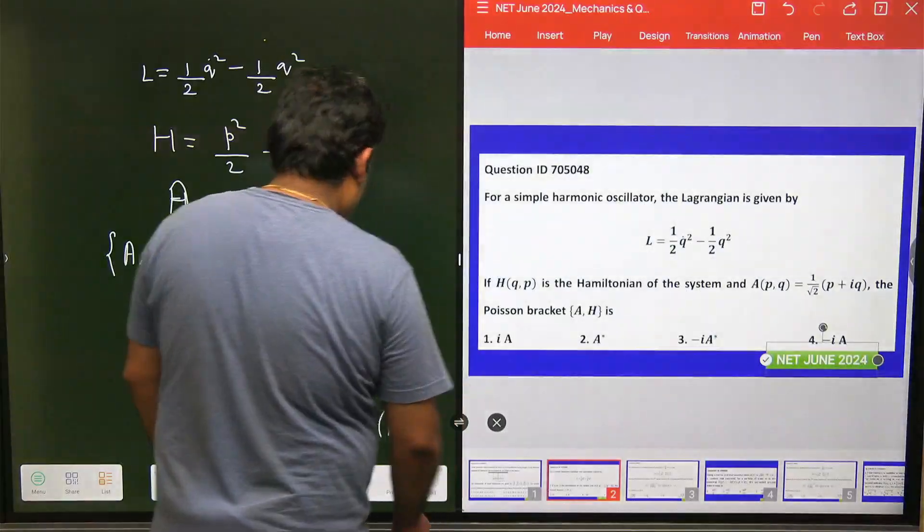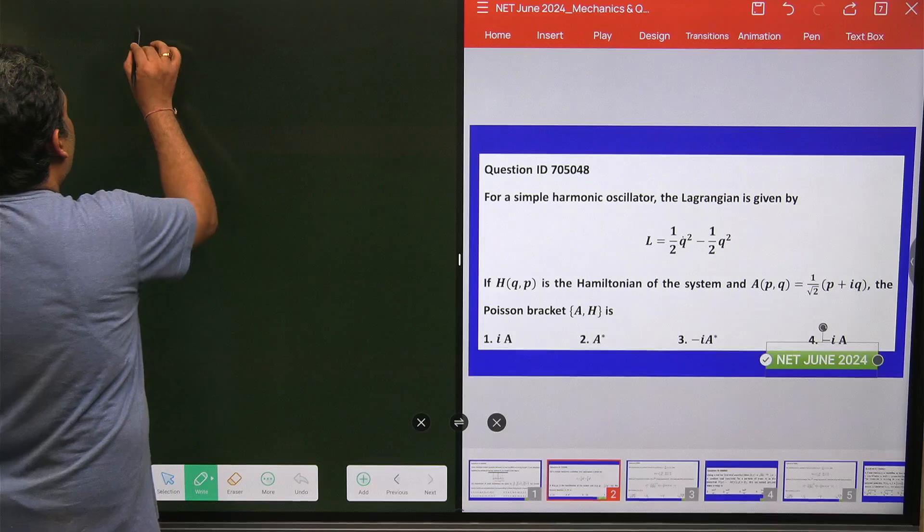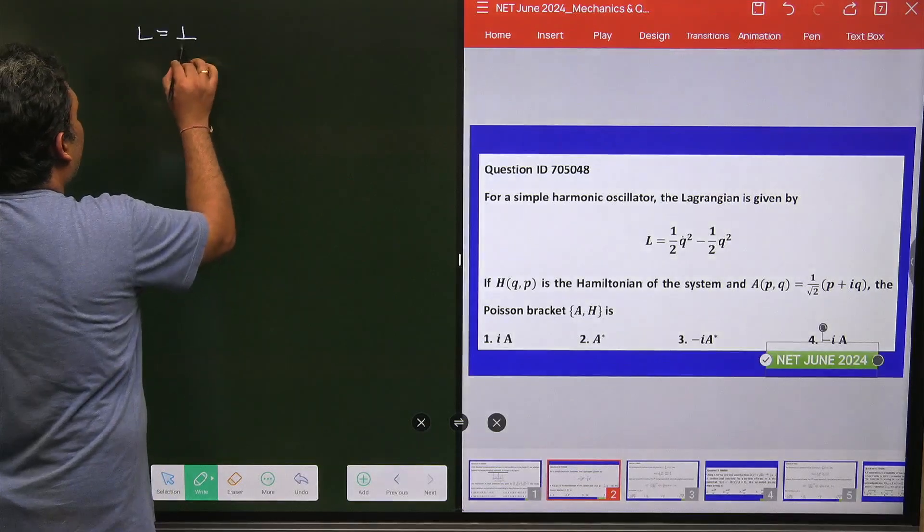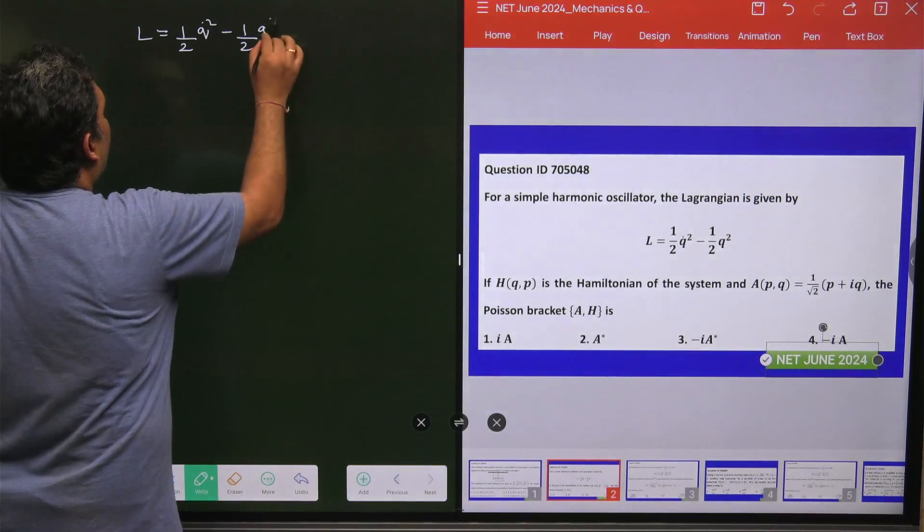You can easily solve this one. This is my Lagrangian. The Lagrangian for the harmonic oscillator is L = 1/2 q̇² - 1/2 q².